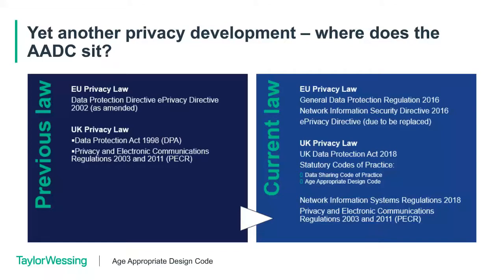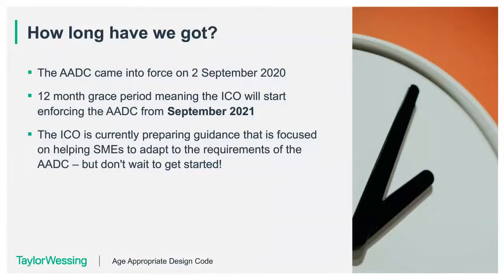The ICO talks about the sheer impact of what this code is trying to do and mentions that they've taken the decision to give businesses a year to prepare, and why they're offering help and support. The ICO mentions particularly small businesses, but we think many businesses will need the lion's share of that 12-month timeframe to properly prepare and implement change. The AADC fits into the regime as a UK statutory code — it does not apply elsewhere outside of the UK, though it will have potential for extraterritorial impact similar to the GDPR.